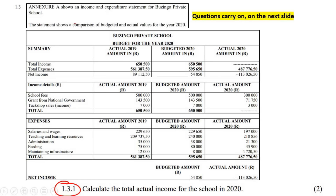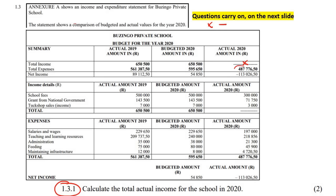So it says calculate the total actual income for the school in 2020 — we're just going to look at these values. Unfortunately, in 2020 the school actually made a loss, quite a big loss. It's probably COVID, because it is 2020. So we can set up a mathematical equation. We can say this number, which we don't know, is x. So: x minus your expenses — remember you always minus your expenses — so x minus 487,776.50, and we make that equal to the negative number, which is the net loss: negative 026.50.